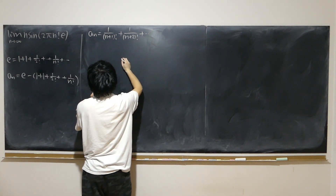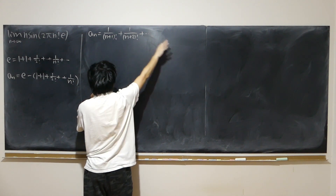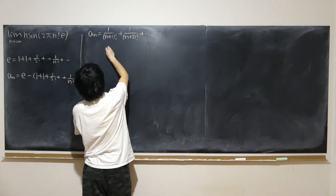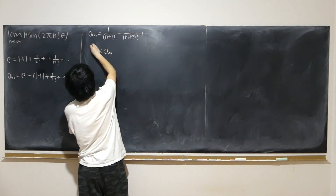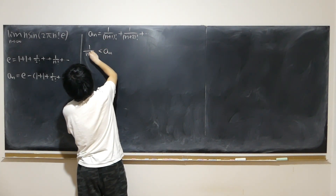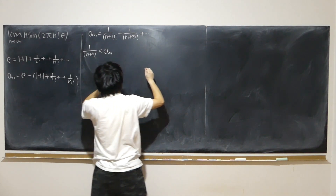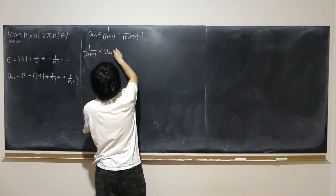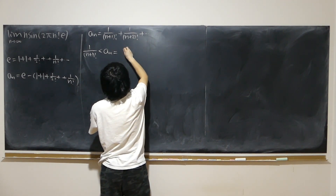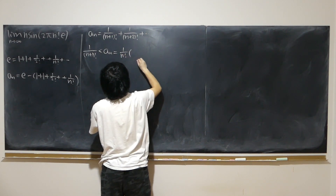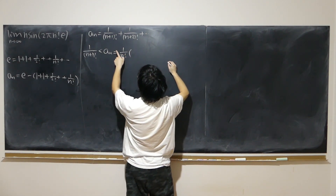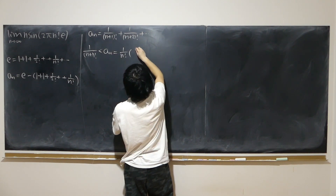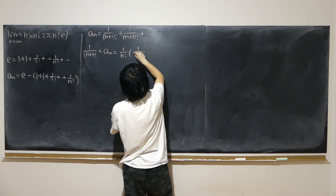If I get rid of all the other positive terms, aₙ should be bigger than the first omitted term. So aₙ is bigger than 1 over (n+1) factorial. To see that, I extract 1 over n factorial: note that (n+1) factorial is just n factorial times (n+1), so 1 over (n+1) factorial equals 1 over n factorial times 1 over (n+1).